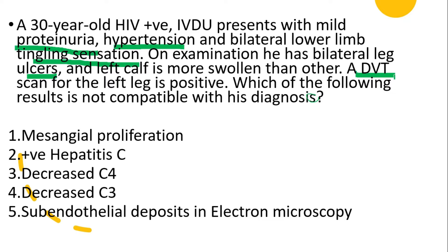This is where the concept building of medicine comes in. You have to correctly identify all the statements that are true for membranoproliferative glomerulonephritis type 1. The correct answer is number 4. Decreased C3 is a feature of membranoproliferative glomerulonephritis type 2, not type 1. All the rest of the statements are true for type 1.